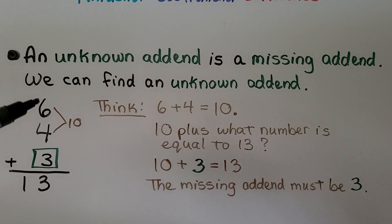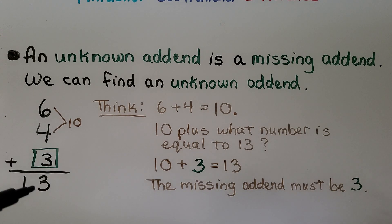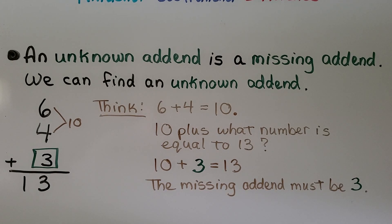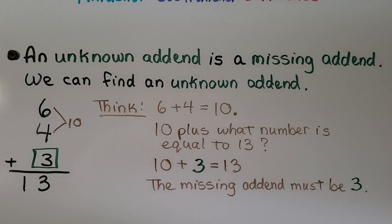We add the addends that we have and find out what we need to make that sum. We can count on from 10: 11, 12, 13. We counted on three to get 13.